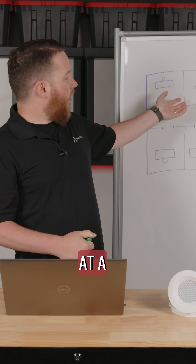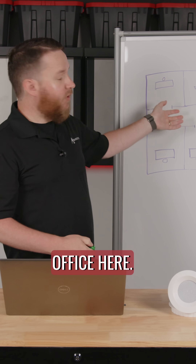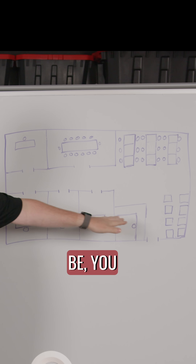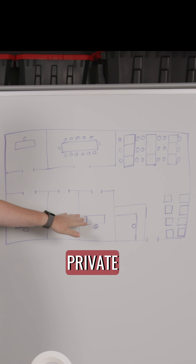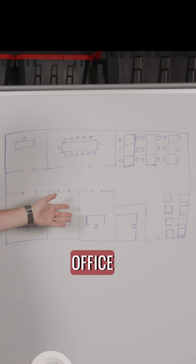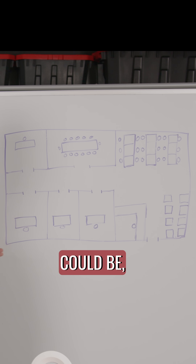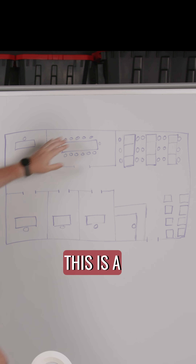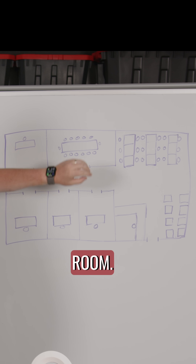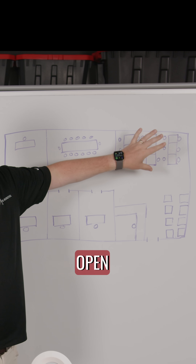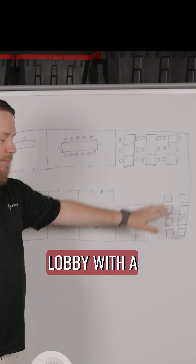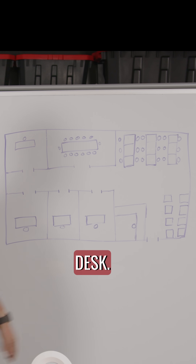What does that mean? So, let's take a look at a makeshift office here. This could be a medical office, or just private offices for somebody working in an insurance office. Or this could be patients. This is a conference room. This is an open sales floor or an open customer service area. And then this is kind of a lobby with a reception desk.